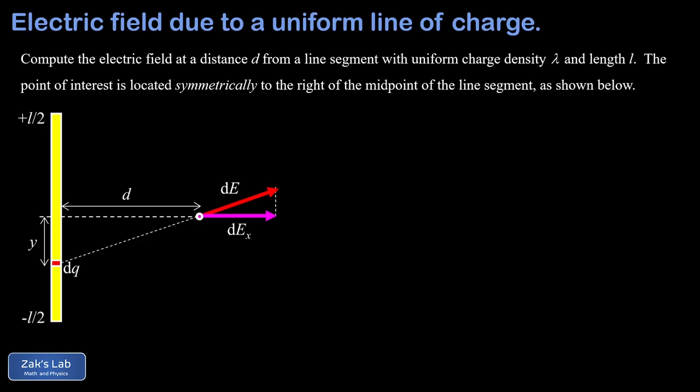First, we look at what happens when the rod gets really long — in other words, it's an infinite line charge. And second, we look at what happens when the rod gets really short and ask whether or not the result makes physical sense. To get started, we've already oriented our rod along the y-axis, and it's bisected by the x-axis.